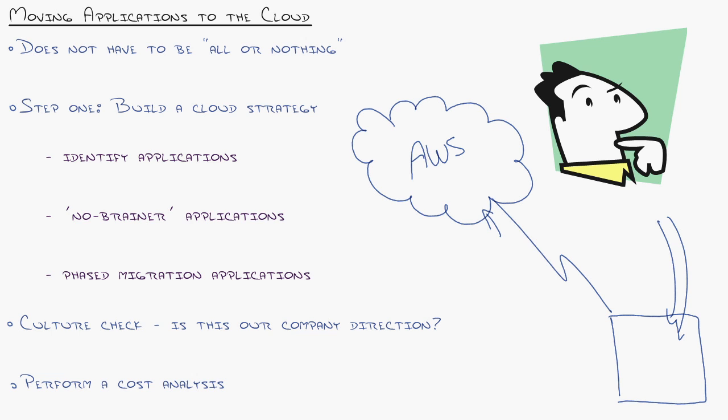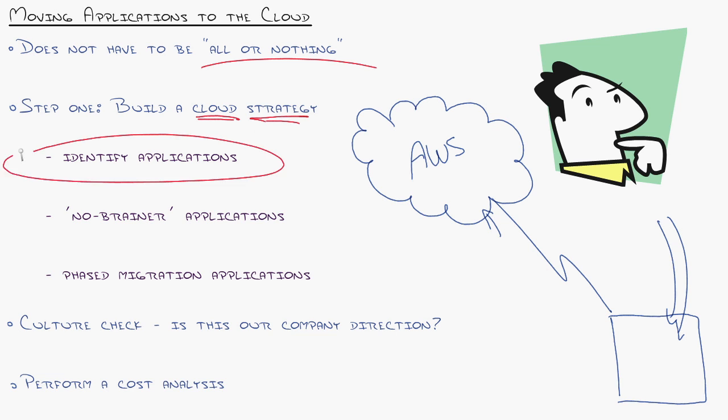Well, first off, realize it does not have to be an all-or-nothing sort of move. CBT Nuggets, which is the company I train for, has moved their entire infrastructure to run out of Amazon Web Services and it took them more than a year to do that. What they did is number one, build a cloud strategy — that means to identify the applications that you want to move. Those applications can be broken up into many different pieces. The no-brainer ones are the ones that you want to move first.